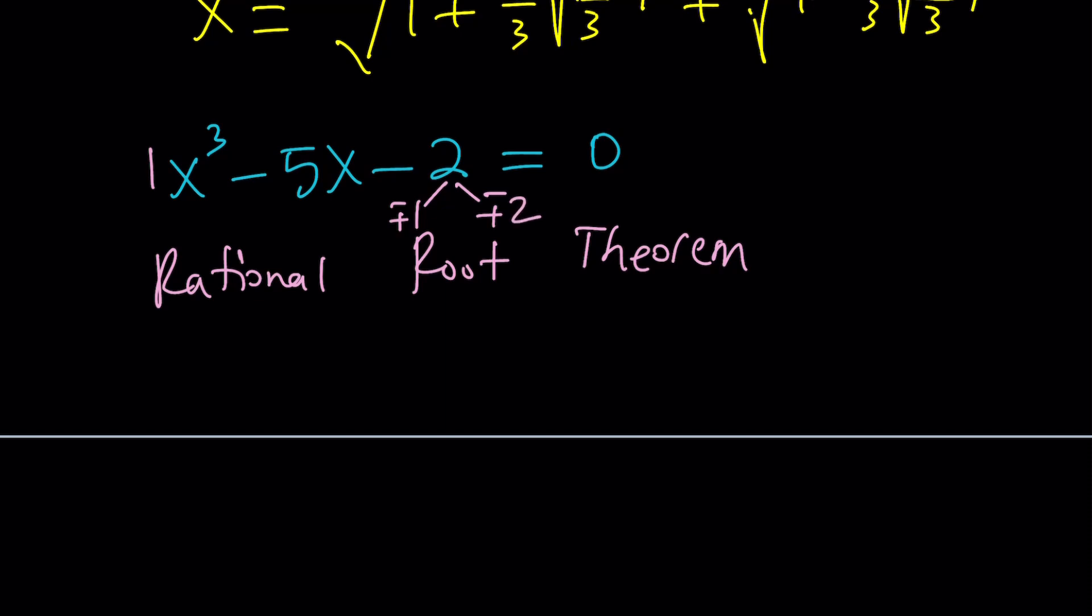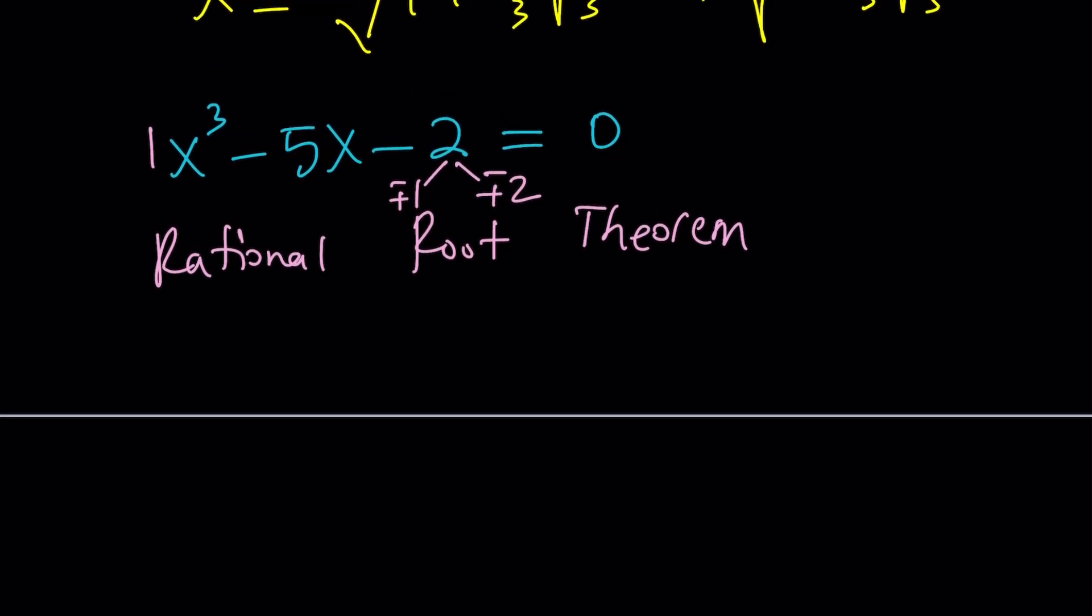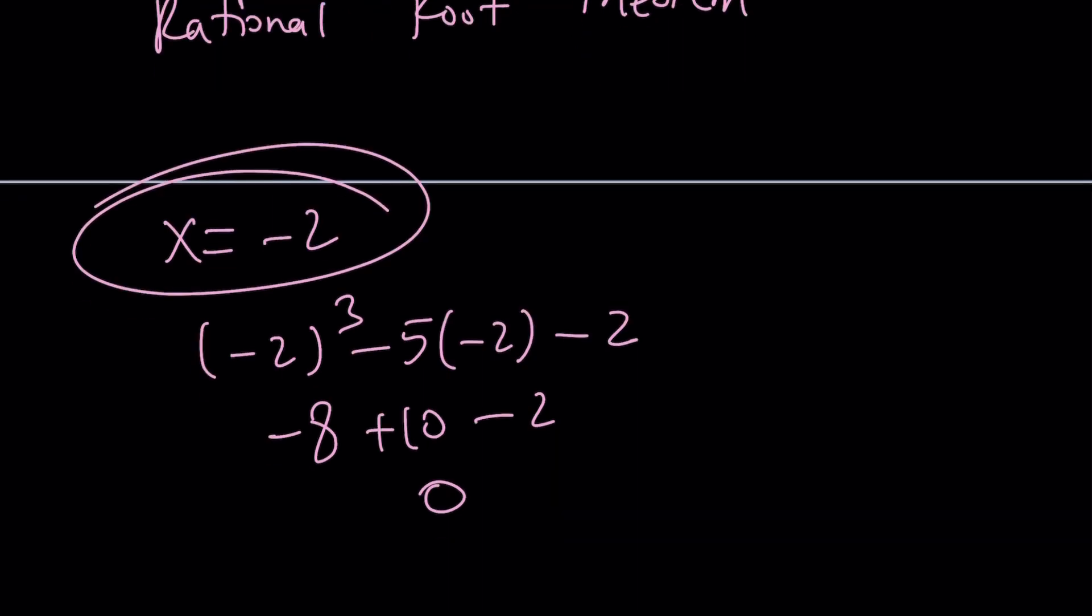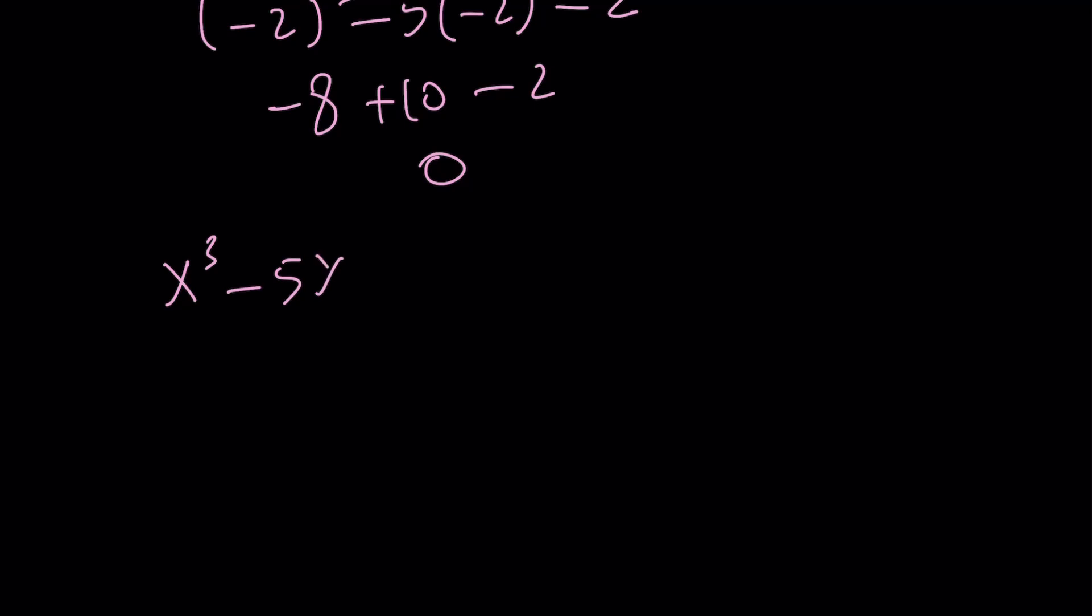We're going to test all of these, and 1 and negative 1 are not solutions, but negative 2 is a solution because if you plug it in, negative 2 cubed minus 5 times negative 2 minus 2 equals negative 8 plus 10 minus 2, and that equals 0. So negative 2 is a solution, therefore our expression can be factored.